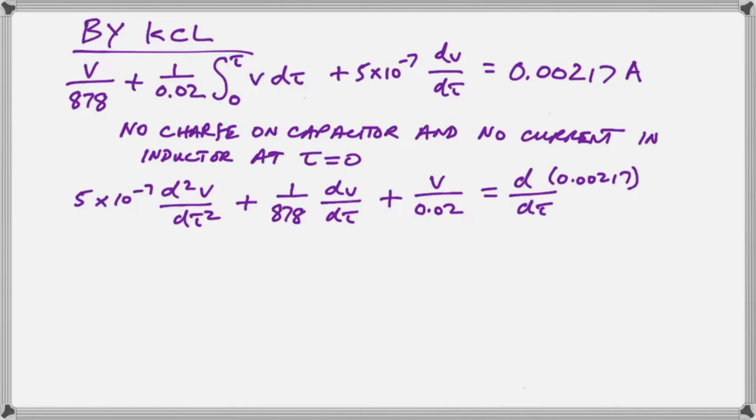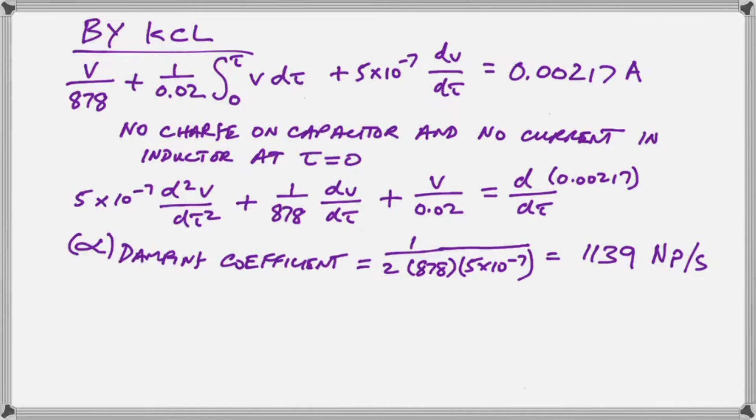Now what we need to realize is that in the general solution we have produced a shortcut method of finding the important parameters that will help us to decide what kind of solution we are going to get for our differential equation. So the damping coefficient which is labeled as alpha is very specifically 1 over 2 times the resistance times the capacitance. So 1 over 2RC gives us our damping coefficient in neppers per second.